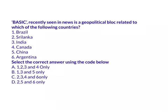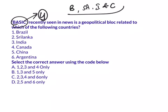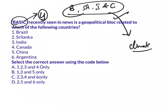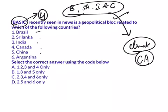The next question: 'BASIC, recently seen in news, is a geopolitical block related to which of the following countries?' BASIC is a geopolitical alliance of four large newly industrialized countries: Brazil, South Africa, India, and China. These four nations are working to define a common position on emission reductions and climate aid money, and try to convince other countries to sign up to the Copenhagen Accord. The answer is B — one, three, and five only.